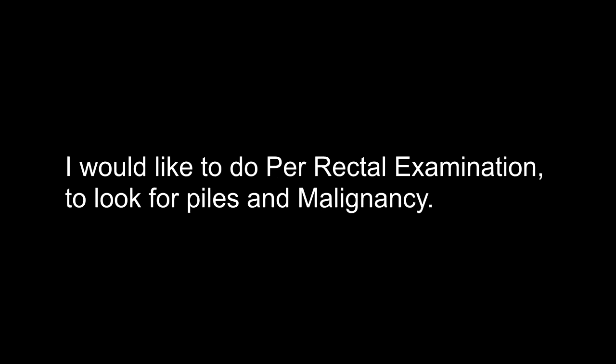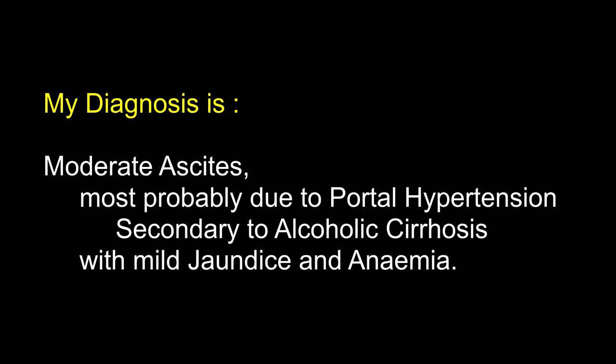I would like to do per rectal examination to look for piles and malignancy. My diagnosis is moderate ascites, most probably due to portal hypertension secondary to alcoholic cirrhosis, with mild jaundice and anemia. Why did you think of portal hypertension? He is a chronic alcoholic with gradual onset abdominal distension and mild edema. There are dilated veins over the abdomen signifying portosystemic anastomosis. There is ascites with horseshoe-shaped dullness and enlarged spleen, so the most likely cause is cirrhosis with portal hypertension.